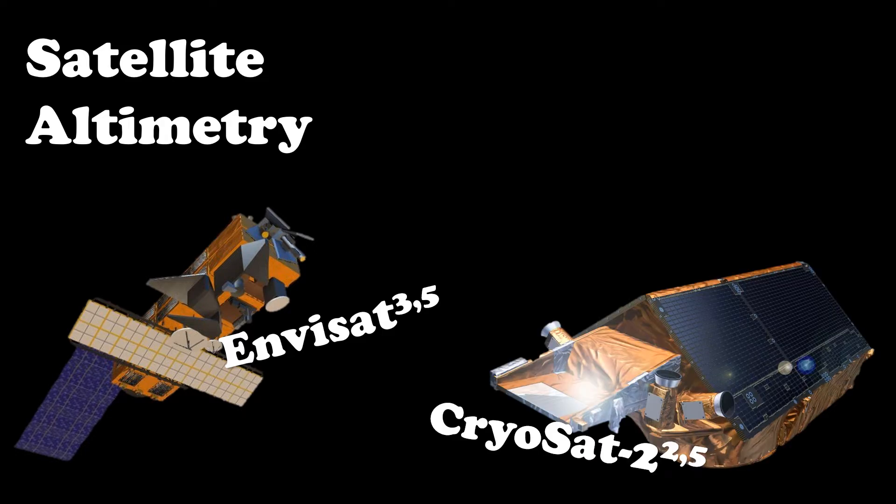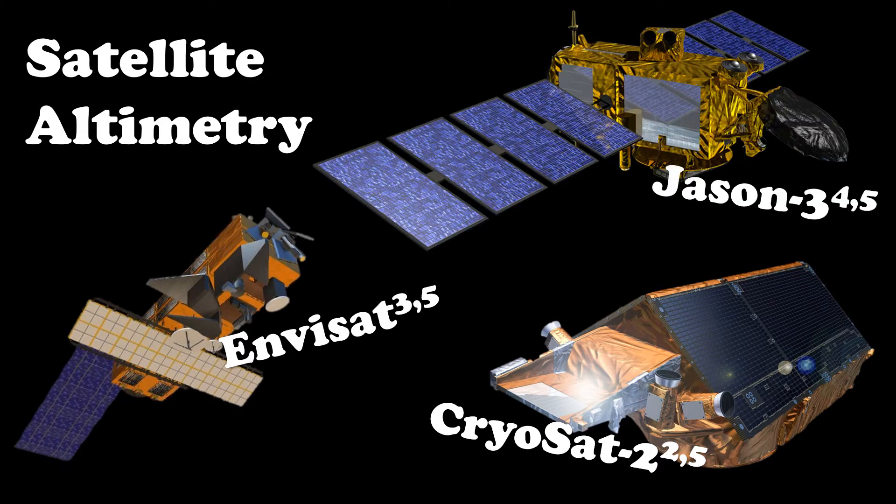Cryosat-2 is another ESA satellite, this one being specifically dedicated to polar observation, and Jason-3 is a collaborative project which produces highly precise altimeter measurements.